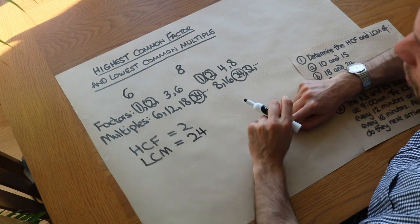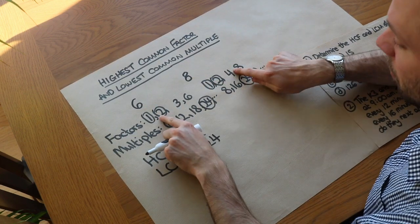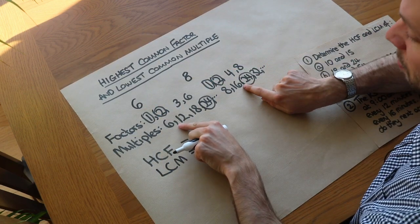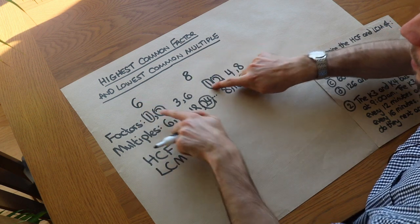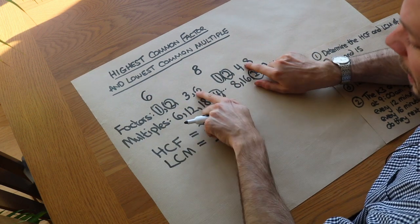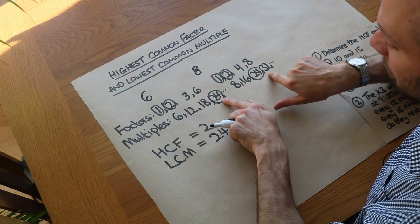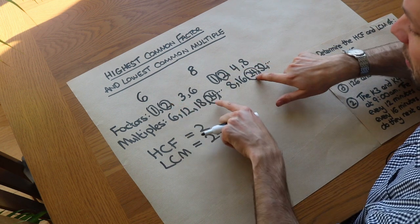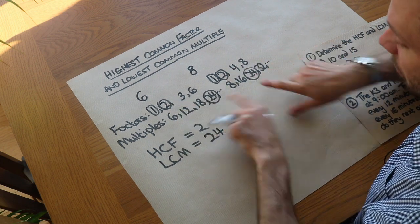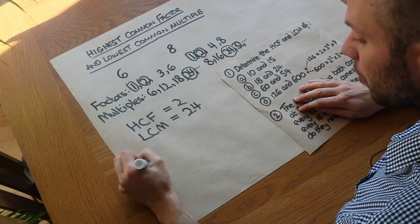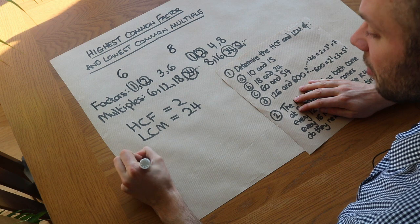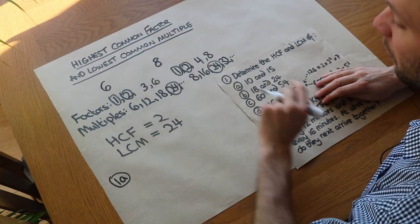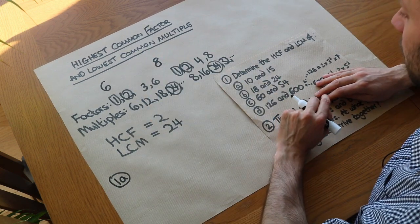One way to find the highest common factor and lowest common multiple is to list their factors and some of their multiples and see what the highest or lowest numbers in common are. Let's do another example using that same method, and then we'll see an alternative method which uses the prime factorization of the numbers.